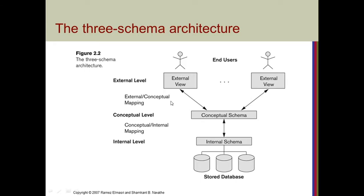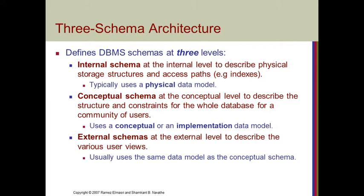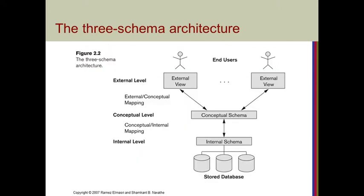The arrow marks represent mappings — connectivity programs between the schemas. The external level is the last one. External schemas at the external level describe the various users' views. The same database can be used by many users who fall into different groups. For example, in a university database, the view of a student is different, the view of a lecturer is different, and the view of university officers is different. Different external view programs are written for each — that is called the external level schema.